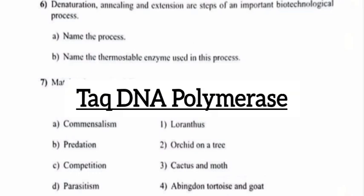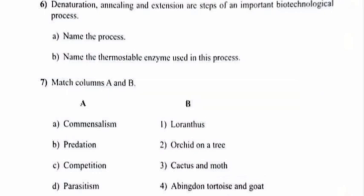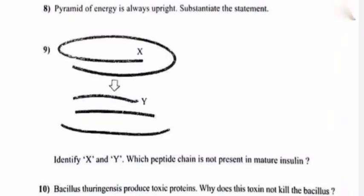Question 7: Match columns A and B. Answer: A — Commensalism: 2. Orchid on a tree. B — Predation: 3. Cactus and moth. C — Competition: 4. Abingdon tortoises and goat. D — Parasitism: 1. Loranthus.